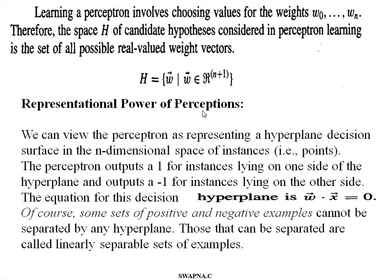Regarding the representational power of Perceptrons: the Perceptron represents a hyperplane decision surface in n-dimensional space. If we use x and y dimensions only, it represents a two-dimensional boundary, but a Perceptron can represent a hyperplane with n dimensions. The Perceptron outputs 1 for instances lying on one side of the hyperplane and minus 1 for instances lying on the other side.